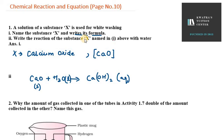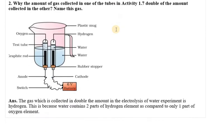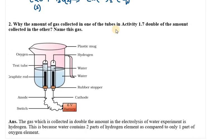So this is the reaction of the substance X with water. Now question number 2. It says why the amount of gas collected in one of the tubes in activity 1.7 double of the amount collected in the other.